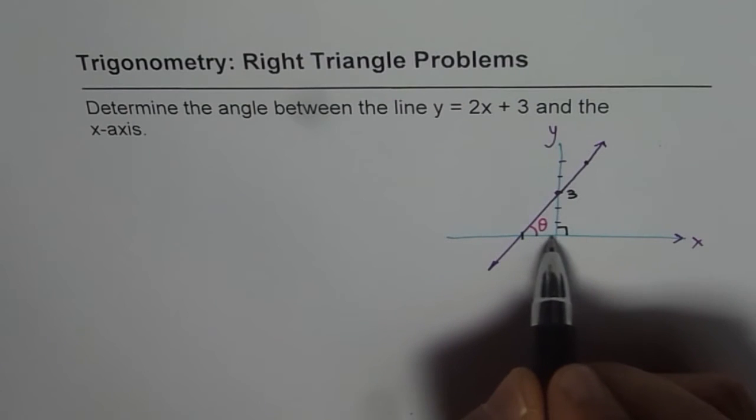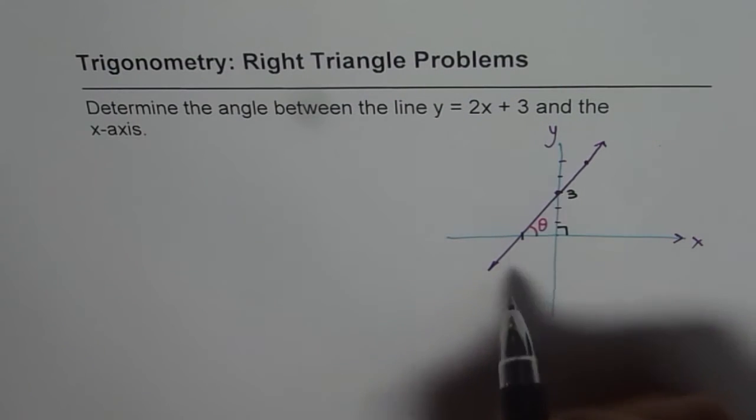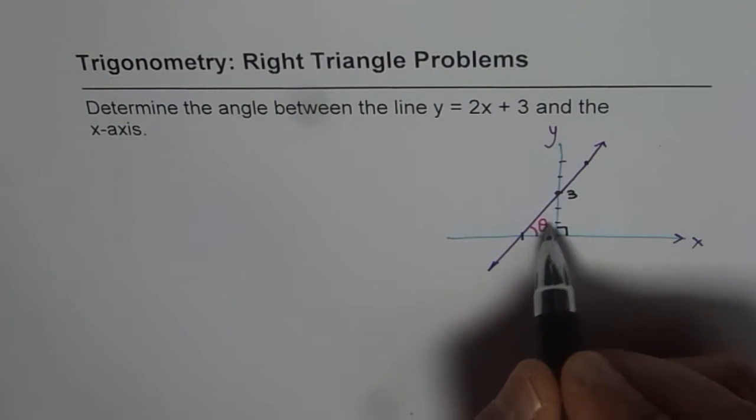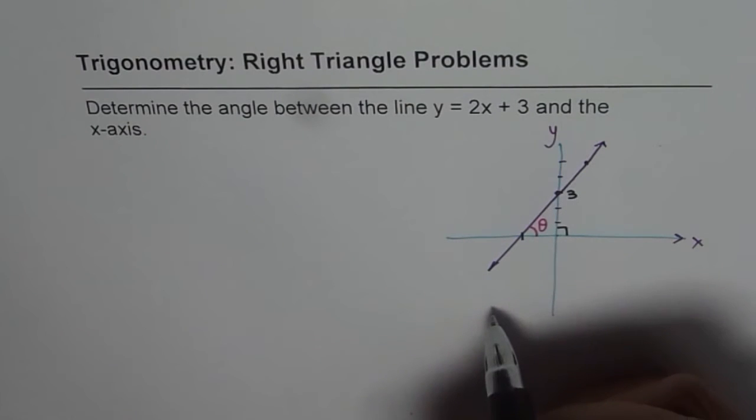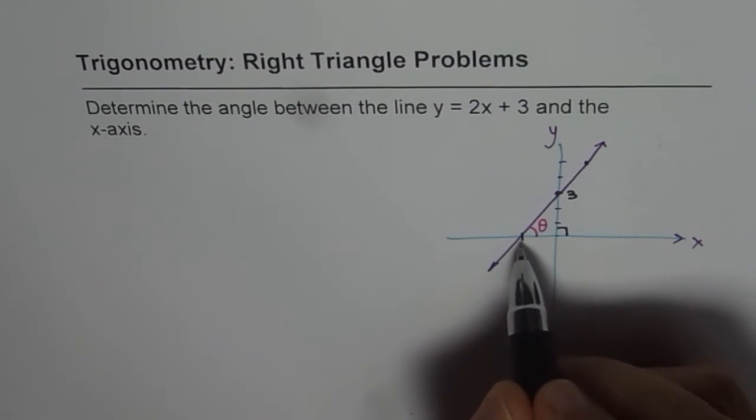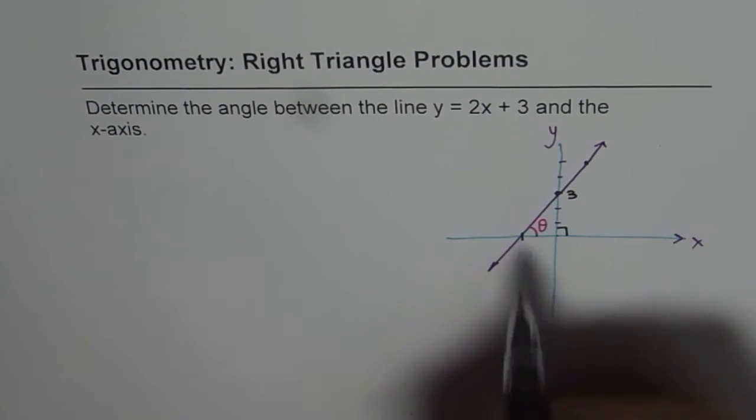So if I can find the x-intercept, I will know the base of this triangle and I already know the height. And using tan of theta, we can find the angle. So let's find the x-intercept.